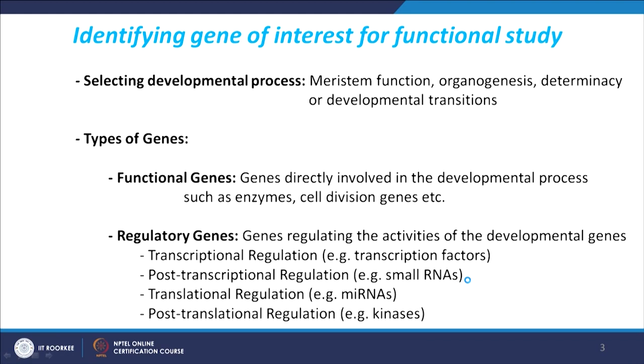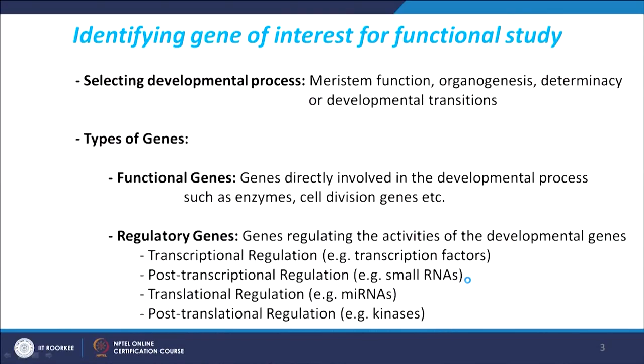If we want to take a reverse genetics based approach, there are things we have to fix first before identifying a gene. First, we want to fix the developmental process. This is very similar to what we have done in forward genetics. To identify putative genes, we will fix the process — whether we are interested in meristem function, organogenesis, determinacy, developmental transitions, or phase transitions.